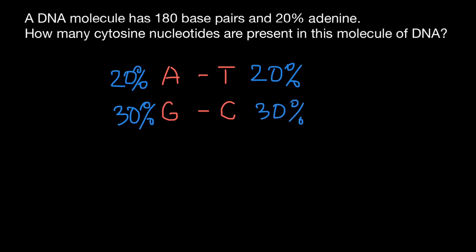Our question is about how many cytosine nucleotides are present. We can say 30%, but we are told that the number of bases is 180. So we have to find 30% of 180.